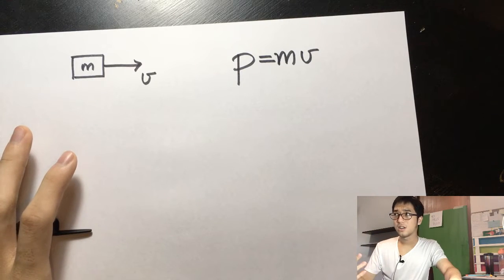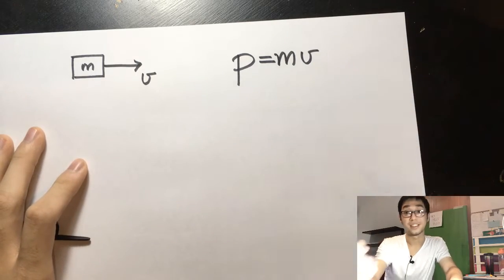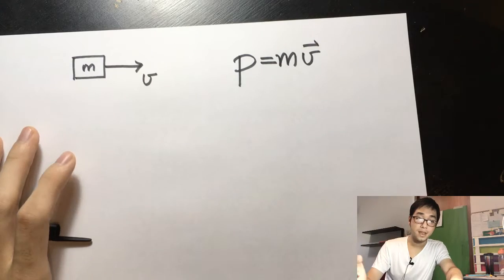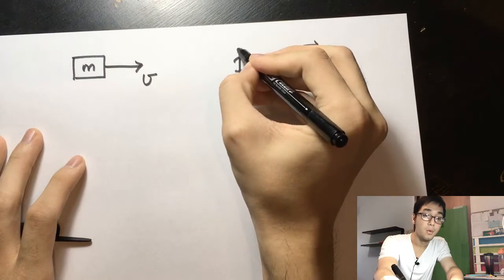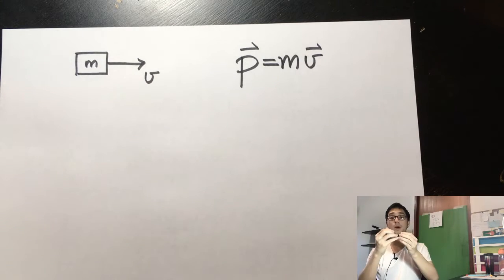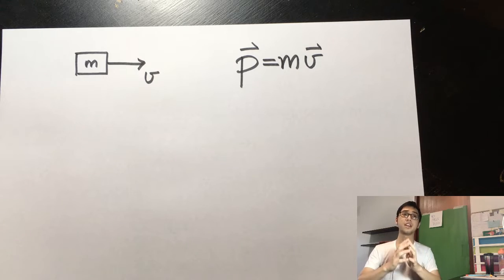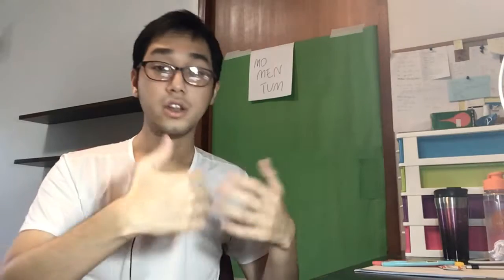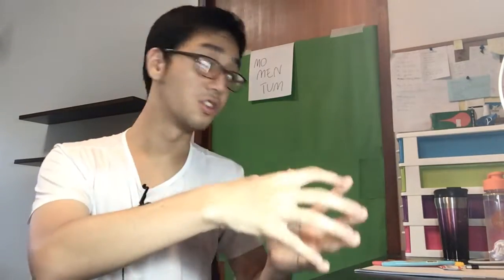If you've done more advanced physics, you realize that velocity v is actually a vector quantity, so you put a little arrow to show that. And because v is a vector, the momentum will also be a vector quantity as well. Now, there's also one other thing you've probably seen when talking about momentum, which is that momentum in any system must be conserved.